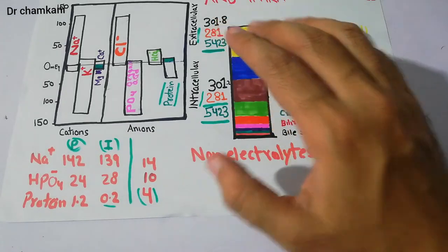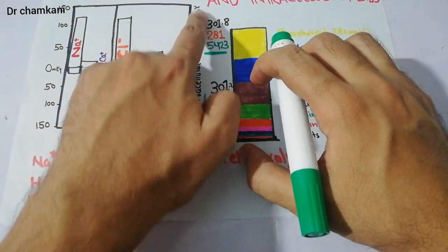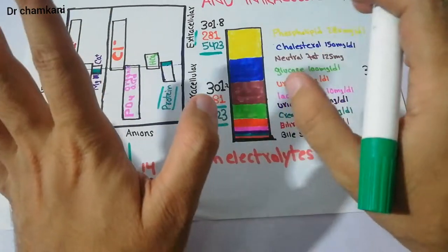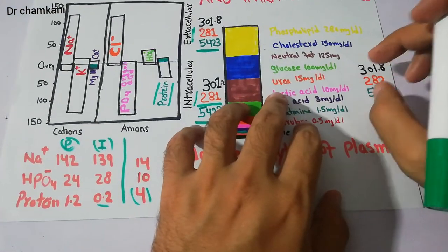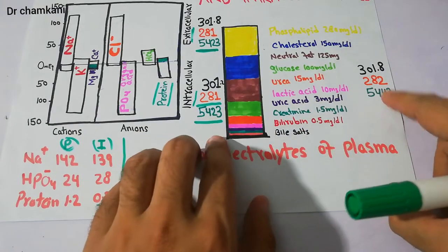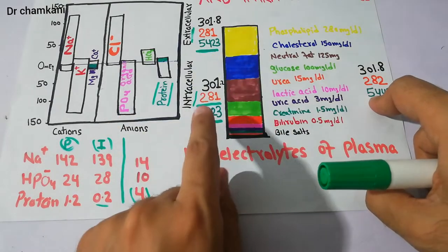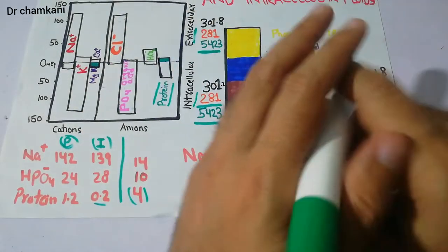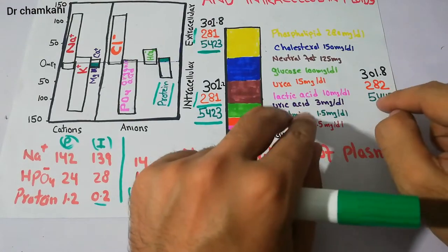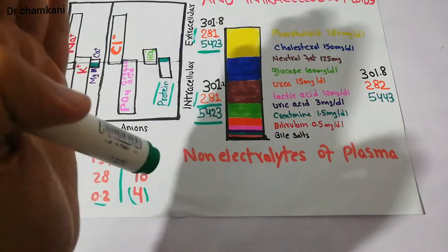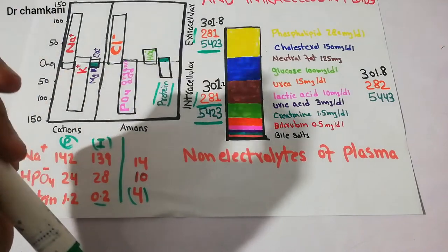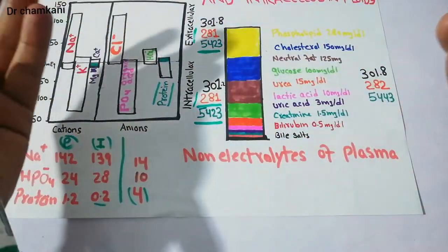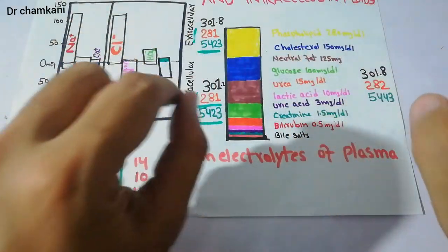In the extracellular fluid compartment, the important ions playing a role in osmolarity are sodium and chloride. In the intracellular fluid compartment, the important cation is potassium, and phosphate and organic acids are the main anions. In the plasma, there are many substances and the osmotic pressure turns out to be 5443 mmHg, which is slightly higher than that of the extracellular and intracellular fluid compartments. The proteins in the plasma play a role here, and this slightly higher osmotic pressure helps maintain an equilibrium between the plasma, interstitial fluid, and intracellular fluid compartments — keeping water, electrolytes, and organic substances in balance, which is very important for homeostasis.